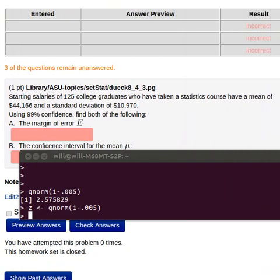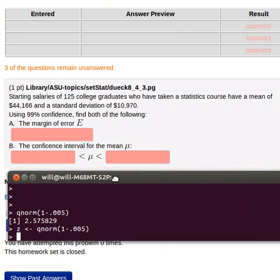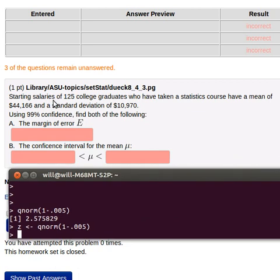Here's the problem we're going to examine. We've got some starting salaries of 125 college graduates who have taken a statistics course. The mean of that sample is 44,166 and the standard deviation of that sample is 10,970.